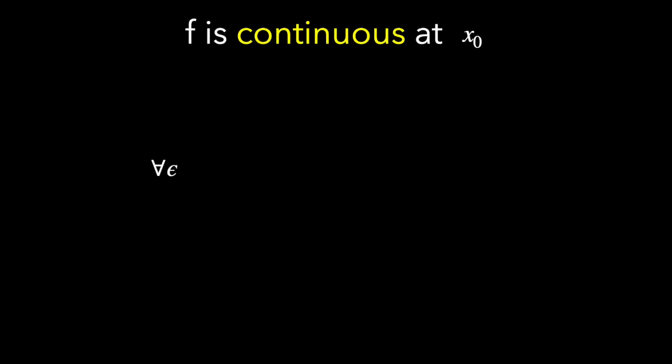Let's formalize this as we've done in the past. f is continuous at x sub 0 if you pick any value of epsilon, some small range around where you expect the y value to be, for that epsilon, there's some delta so that if your x is close enough to x sub 0, then your f of x will be close enough to f of x sub 0.